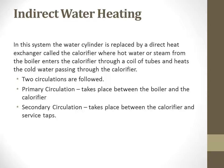Next is the indirect water heating system. In this system, the water cylinder is heated by a direct heat exchanger called a calorifier. Hot water or steam from the boilers enters the calorifier through a coil of tubes and heats the cold water passing through the calorifier. There are two circulations: primary circulation between the boiler and the calorifier, and secondary circulation between the calorifier and the service taps — the normal outlet taps that you use.